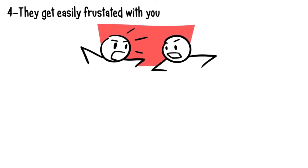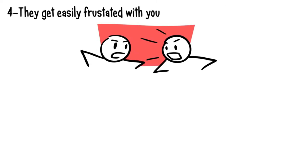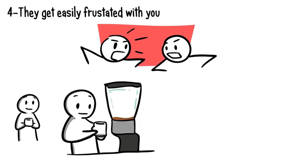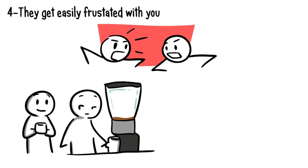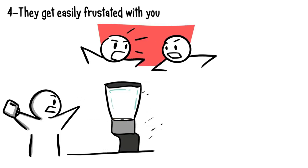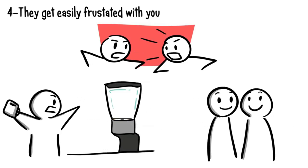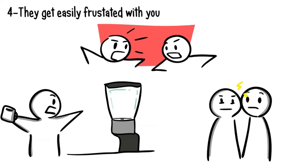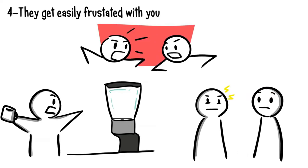Number four, they get easily frustrated with you. Do the two of you argue or disagree over matters on a daily basis? When someone dislikes you, they'll do anything except make things easy for you. They might have been in a good mood, but once they interact with you, they turn sour, bitter, and angry.